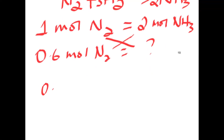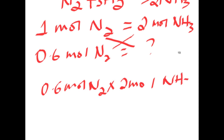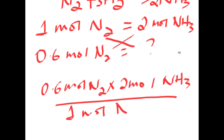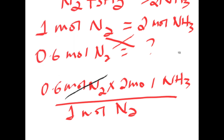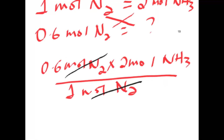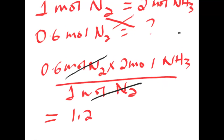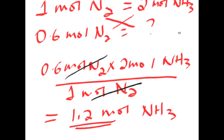The calculation is 0.6 moles of nitrogen times two moles of ammonia over one mole of nitrogen, giving 1.2 moles of ammonia produced from 0.6 moles of nitrogen.